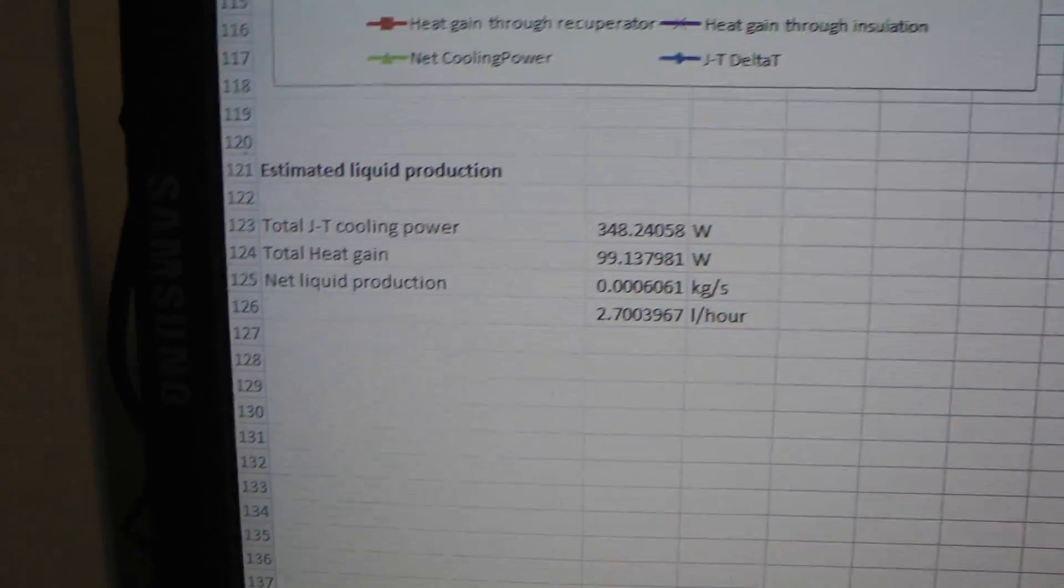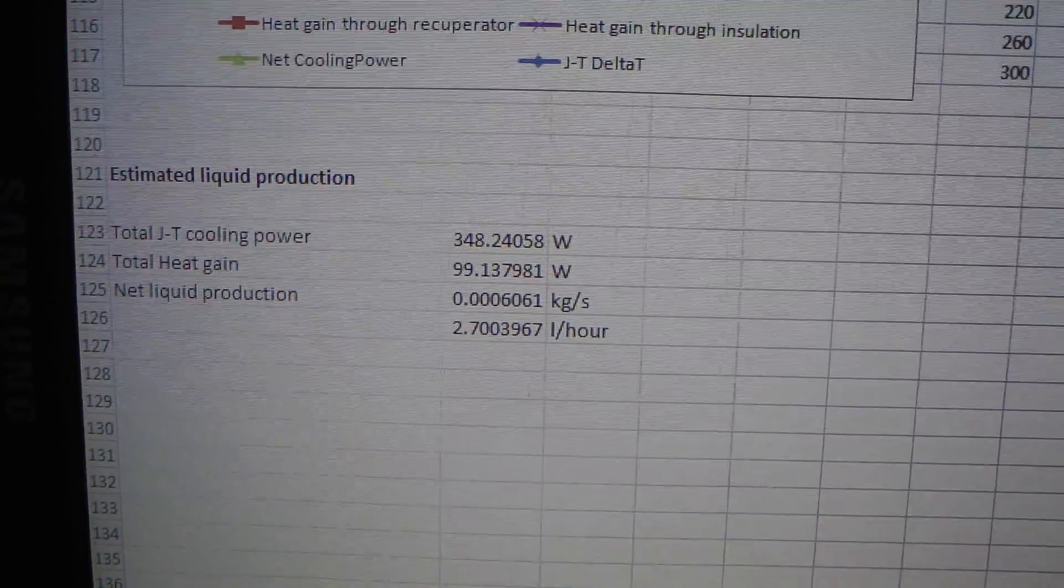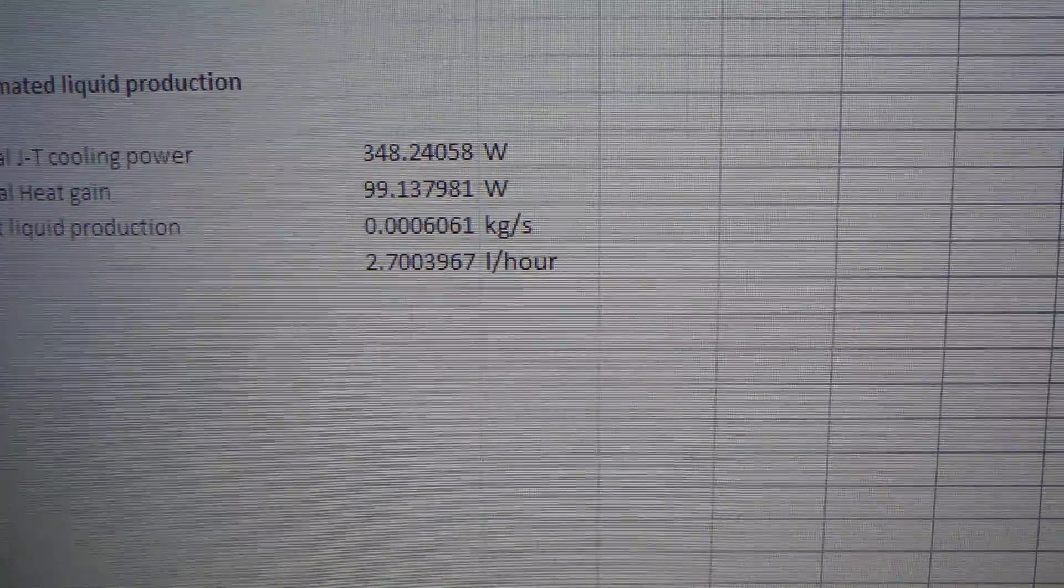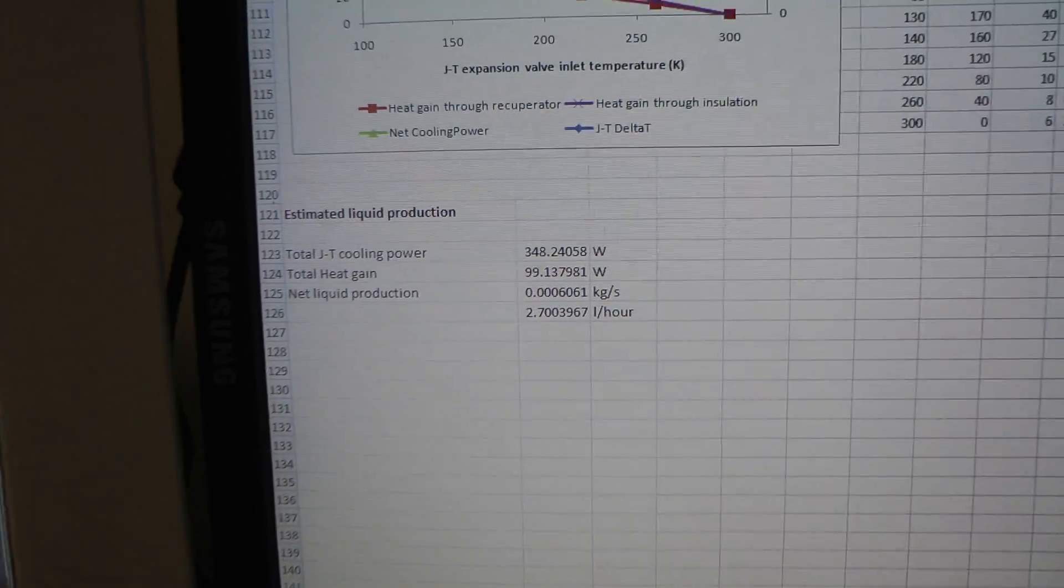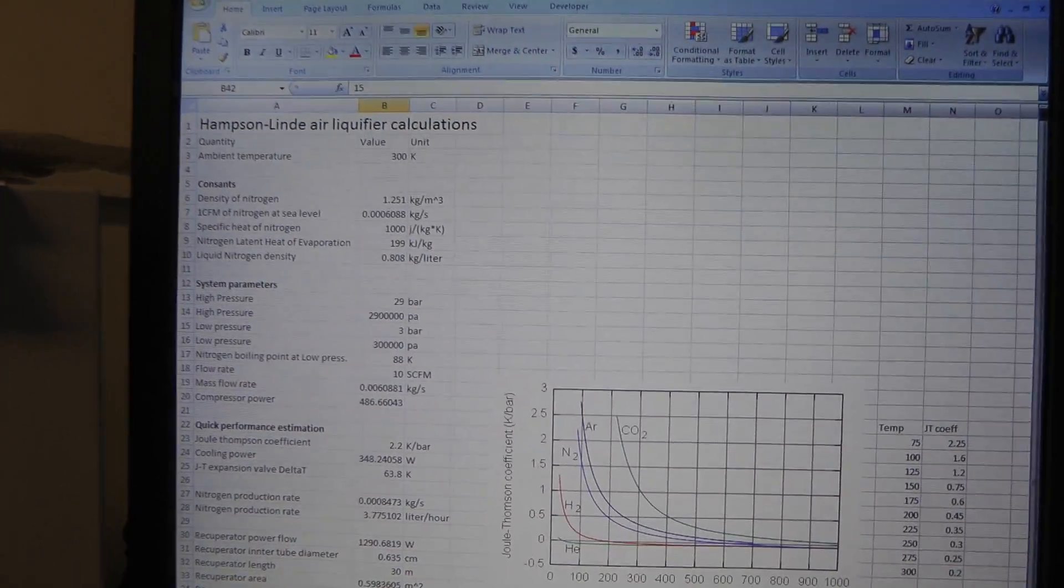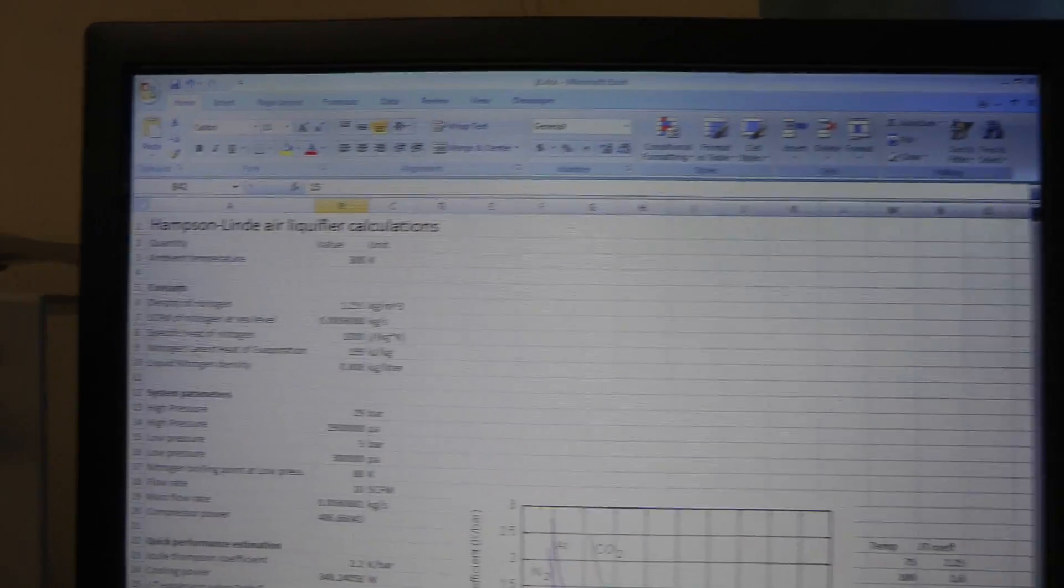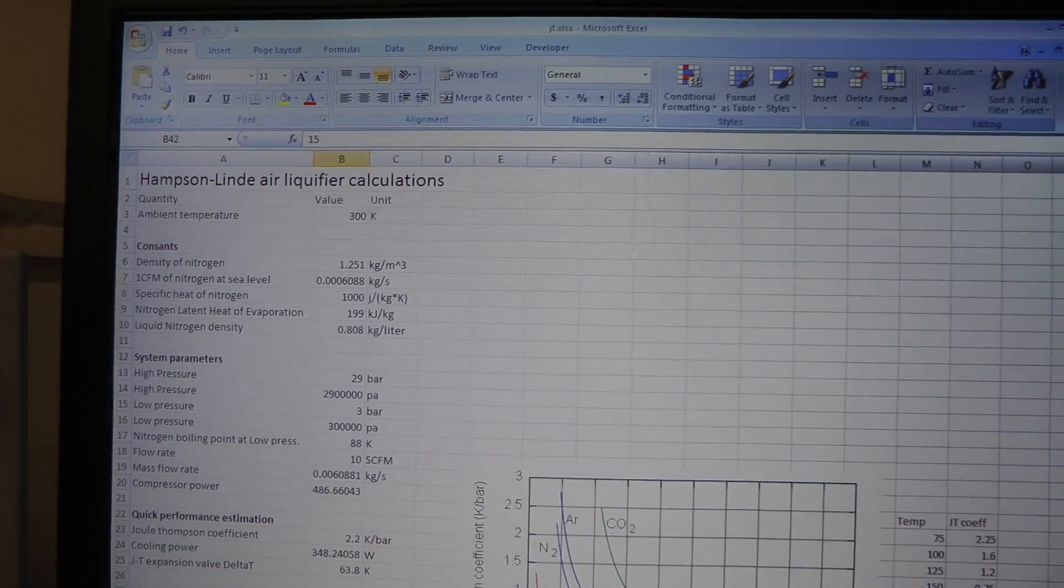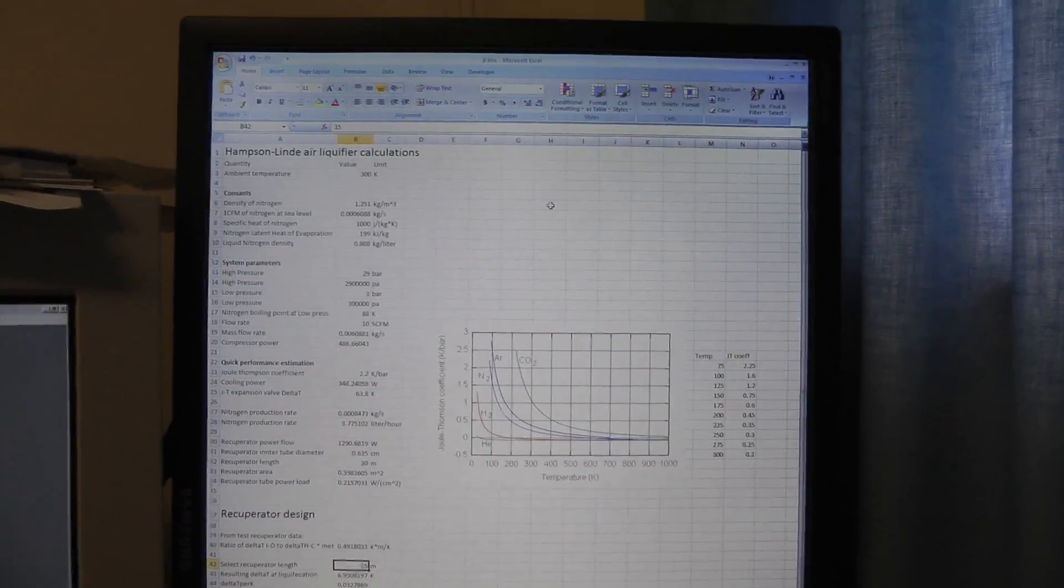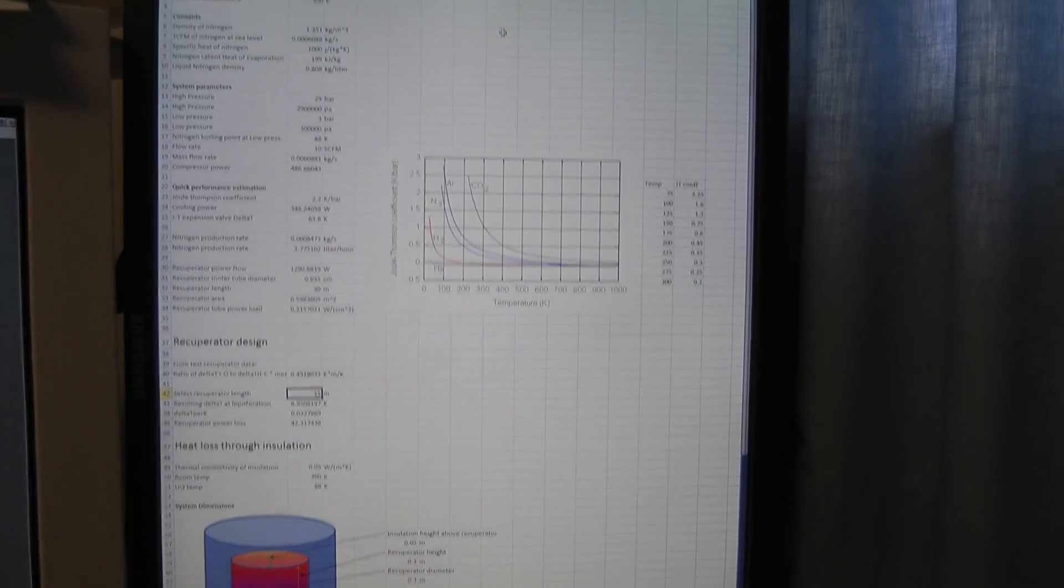And if we just do a quick estimate of the liquid production with the heat losses calculated above, it looks like we'll get about a bit over two and a half liters per hour. So that's actually pretty good. For the purposes of these calculations, I'm assuming that air is entirely nitrogen, which hopefully isn't too invalid an assumption, because air is mostly nitrogen. I'll post this spreadsheet and post a link to it, if anyone wants to look at it or work through it for their own design. Hopefully you found this interesting. Thanks for watching!